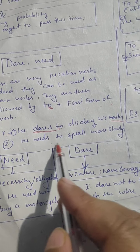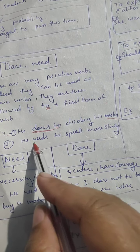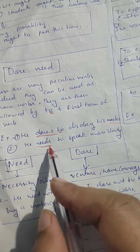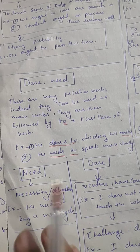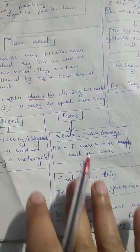And he needs to speak more slowly. Here also, it is a main verb, so it is followed by 'to'. So it is very clear. I have already written here.